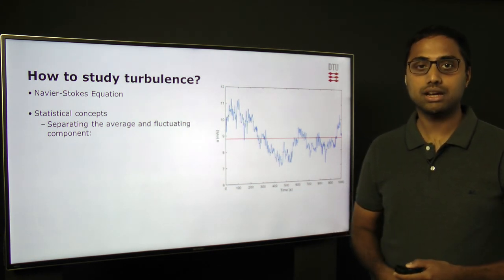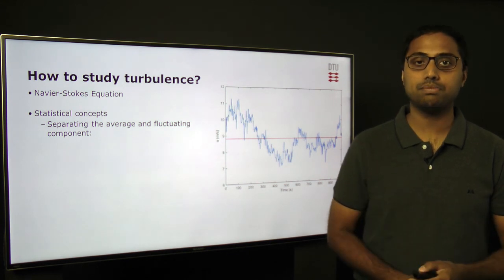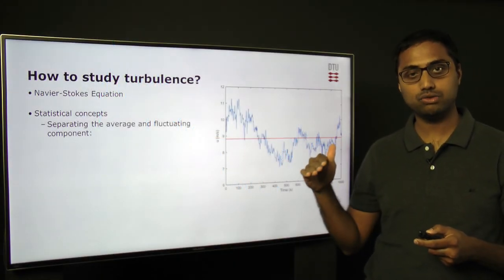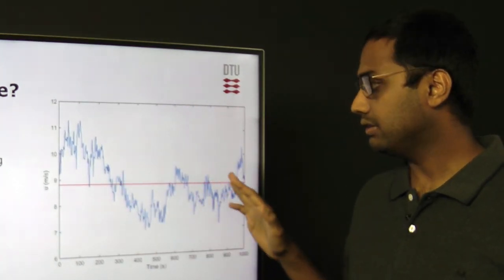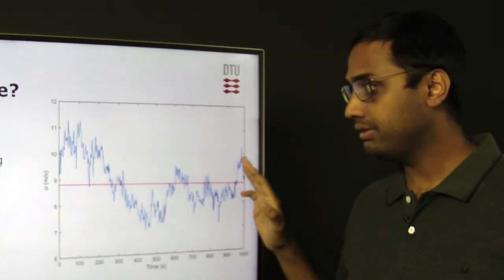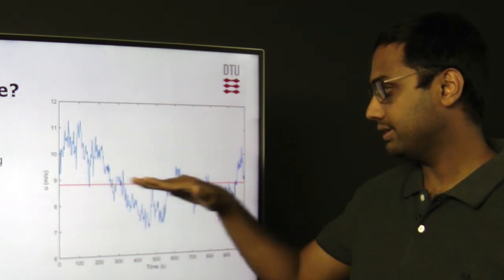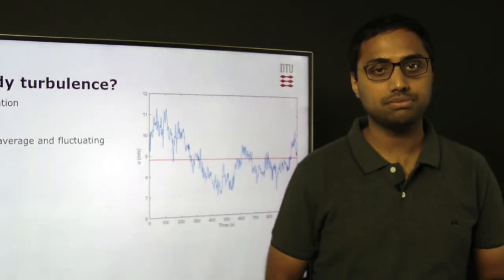As an example, we have here time series where the fluctuations of the air parcels with time are clearly shown. On the x-axis we have time going from 0 to 1000 seconds, on the y-axis we have wind speed. The first thing we do is separate the fluctuations from the mean. We take the mean of the wind speed for the recorded time and we get this red line, and the remaining values are simply the fluctuation.